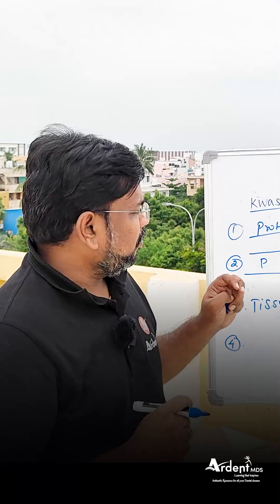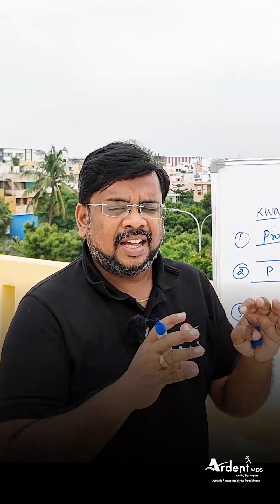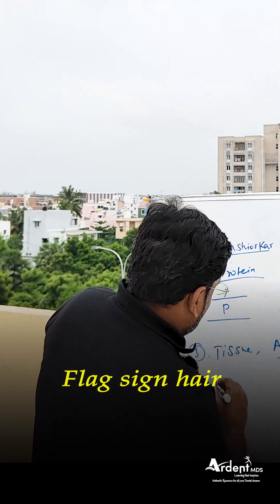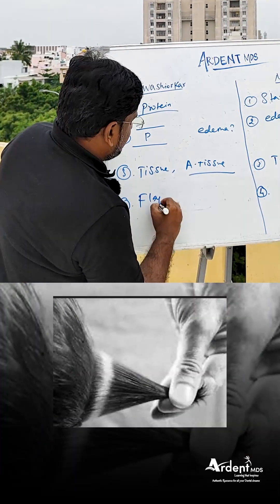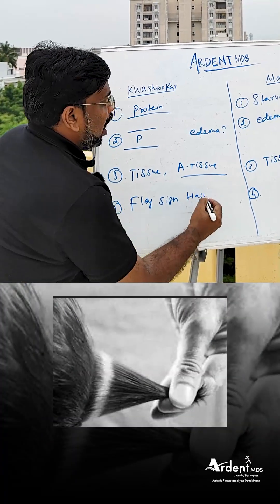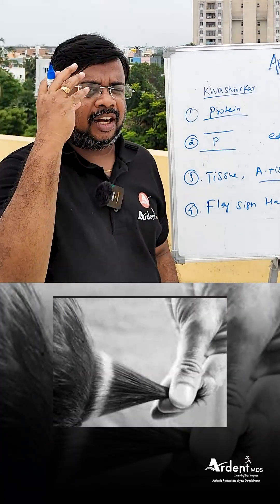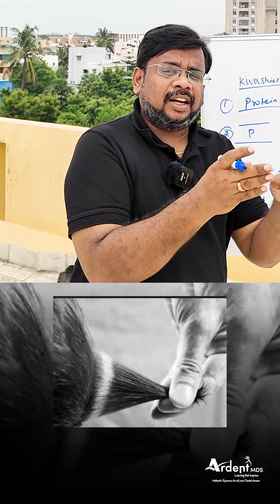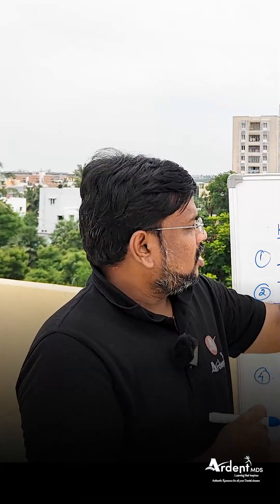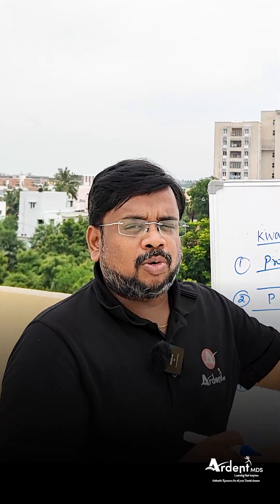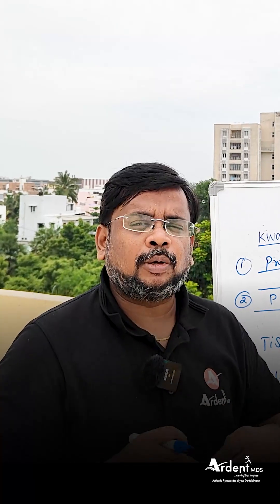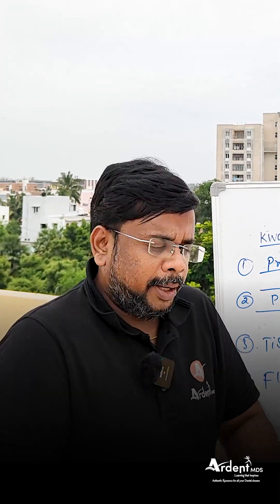The fourth point is something called flaxine hair. Flaxine hair is alternating dark and light hair bands, which is seen in Kwashiorkor. In Marasmus, you won't see flaxine hair; instead, you will see a monkey-like face with a protuberant abdomen.